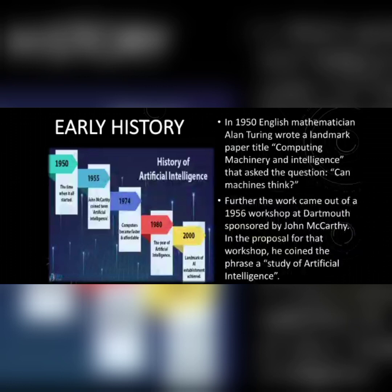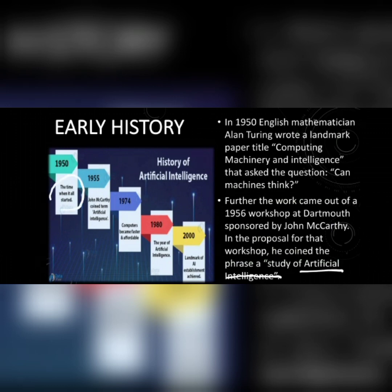What is the early history of artificial intelligence? In 1950, English mathematician Alan Turing wrote a landmark paper titled 'Computing Machinery and Intelligence' that asked the question: Can Machines Think? Further work came out of a 1956 workshop at Dartmouth sponsored by John McCarthy. In his proposal for that workshop, he coined the phrase 'A Study of Artificial Intelligence.' In 1955, John McCarthy coined the term Artificial Intelligence.